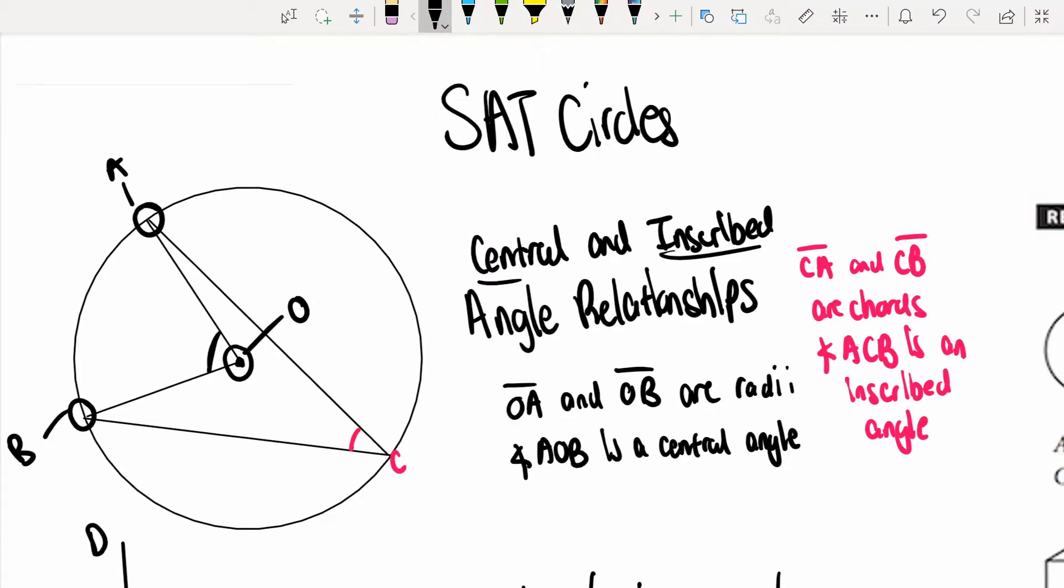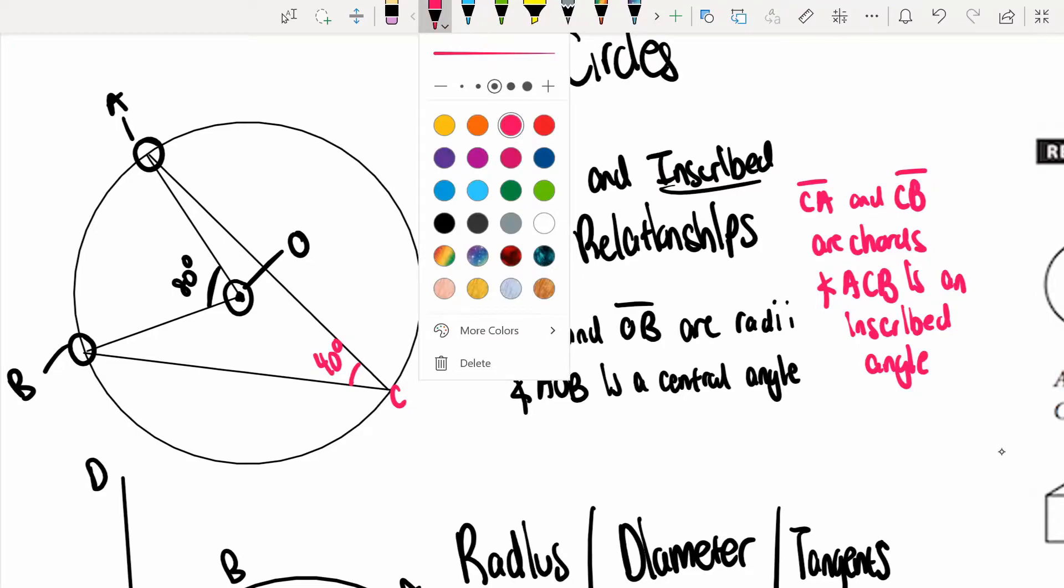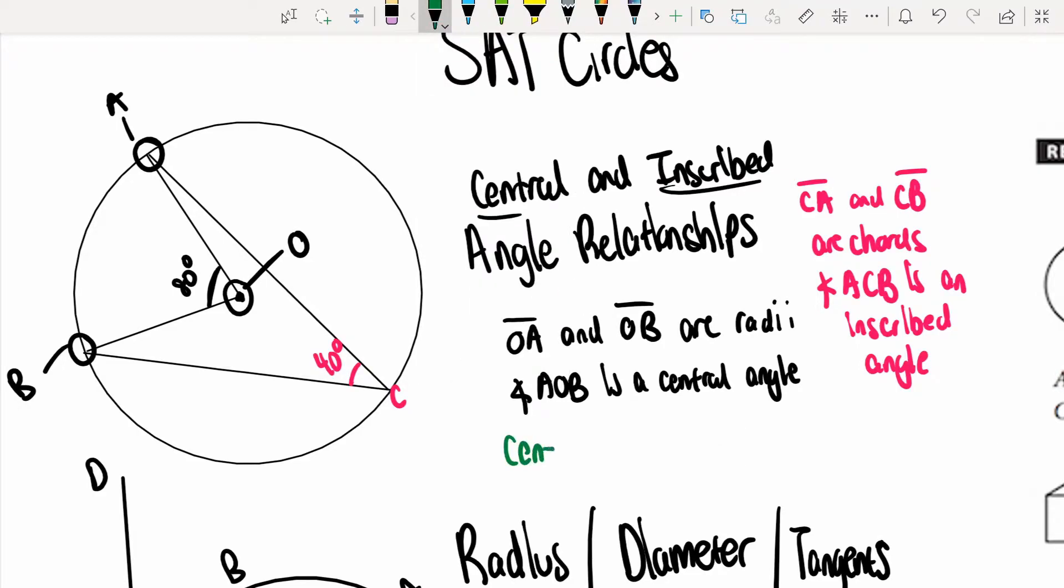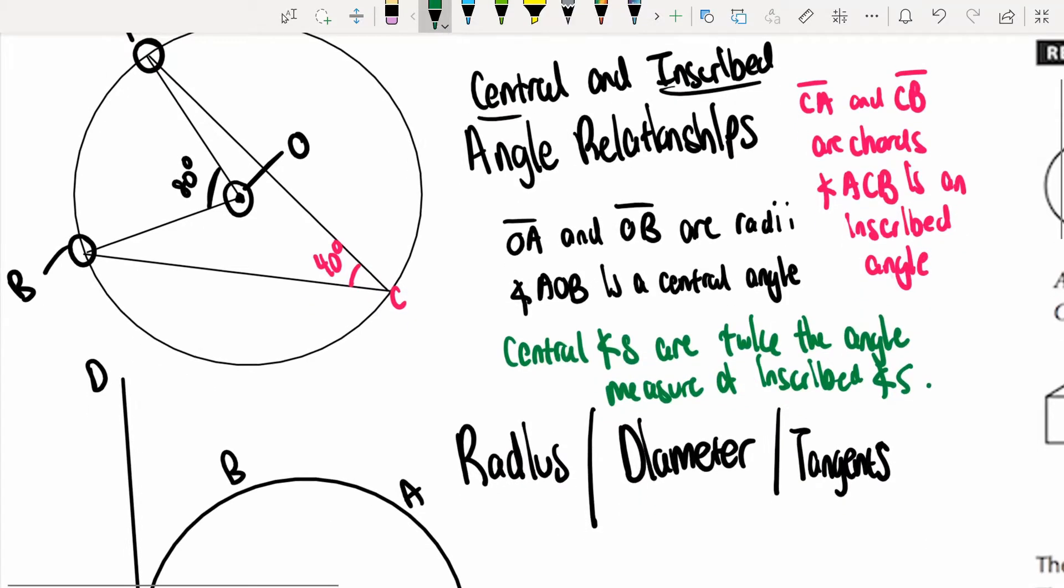What is their relationship? Let's say this angle is 80. The inscribed angle would just be half of that, 40 degrees. You just need to know that central angles go through the center of the circle, inscribed angles go through chords, the gaps between the chords, and that central angles are always two times the angle measure of inscribed angles. That's one thing to keep in mind.